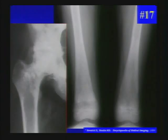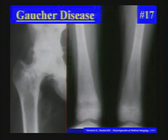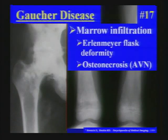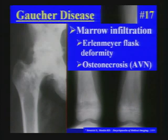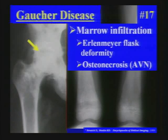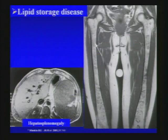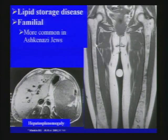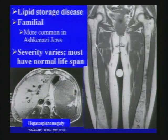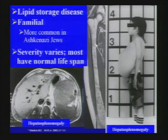Next unknown — Gaucher's disease. Caused by marrow infiltration, it can produce the Erlenmeyer flask deformity as well as osteonecrosis or AVN in the femoral head, as present in this case. It is a lipid storage disease that may be familial. Although severity varies, most patients can have a normal lifespan.